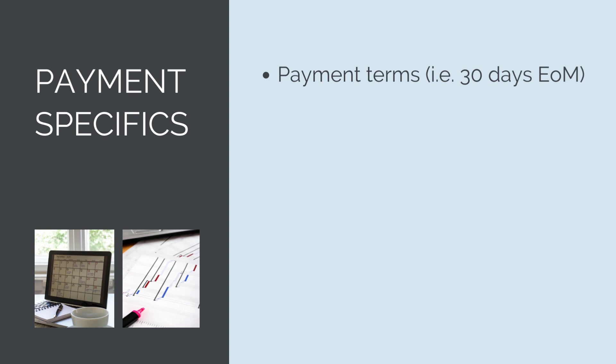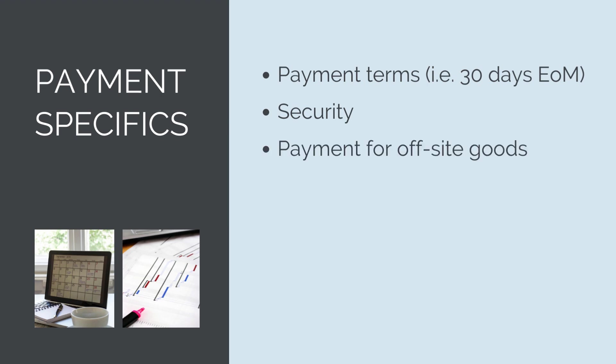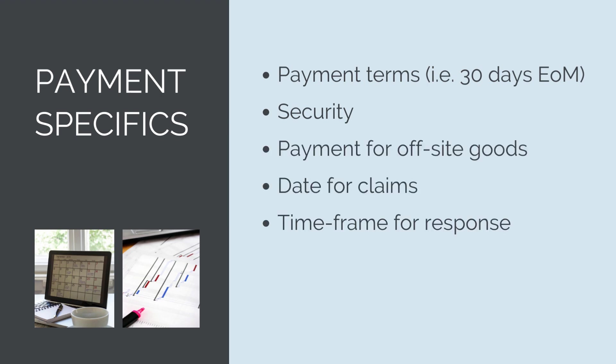The contract will detail specifics around how claims are to be made and the terms of payment. It will specify the payment terms — the duration from when the principal issues the payment certificate to when the money is sent to the contractor — any security requirements such as bank guarantees or cash retention, whether payment for off-site goods is allowed, the date payment claims are to be made, and the timeframe for responding to claims.